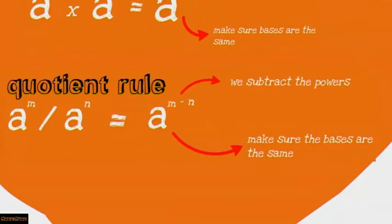And now the quotient rule. When given a to the power m divided by a to the power n, this will equal a to the power m minus n — here we subtract the powers. Remember, the bases must be the same.